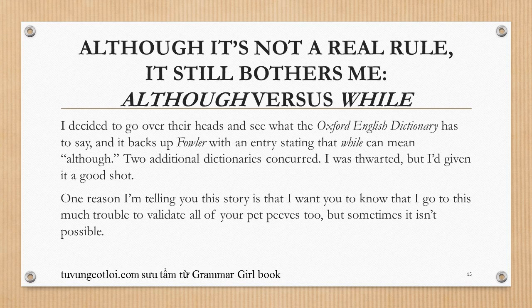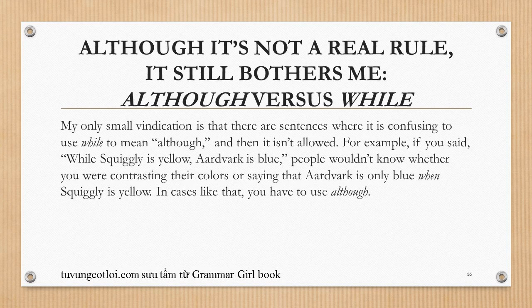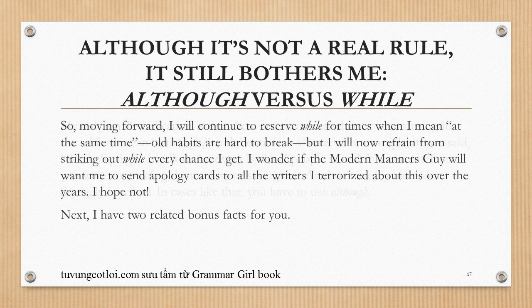I'm telling you this story because I go to this much trouble to validate all of your pet peeves too — but sometimes it is impossible. My small vindication is that there are sentences where it's confusing to use 'while' to mean 'although,' and then it isn't allowed. For example, 'while Squiggly is yellow, Aardvark is blue' — people wouldn't know whether you're contrasting their colors or saying Aardvark is only blue when Squiggly is yellow. In cases like that, you must use 'although.' Moving forward, I'll reserve 'while' for 'at the same time,' but refrain from striking at 'while' every chance I get.